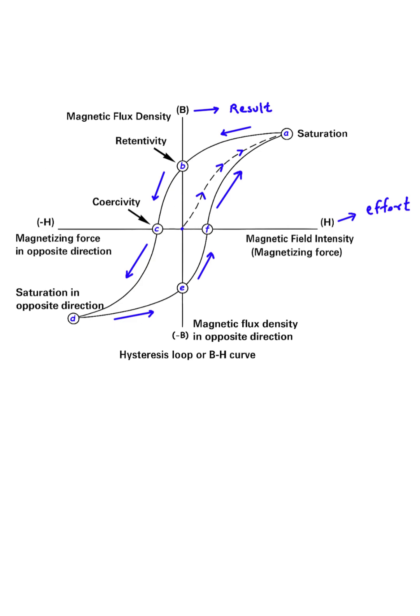This whole loop shows that the magnetic result, B, always lags behind the magnetizing effort, H. The word hysteresis actually means to lag behind.